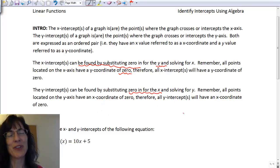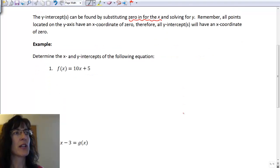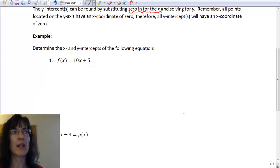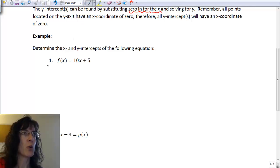So that's another way for you to check. Let's take a look at an example here. Find the x and y-intercepts for the following equation. This one's written in function notation. The first thing we would want to do is change it to slope-intercept form. So it'll look like y equals 10x plus 5.